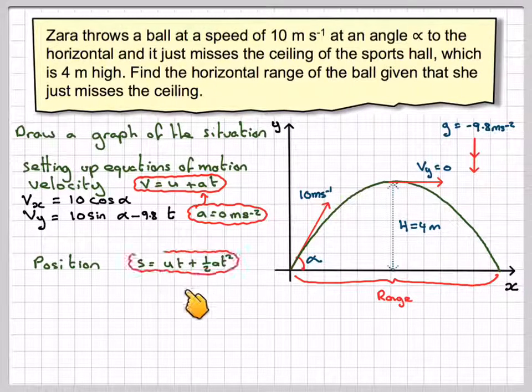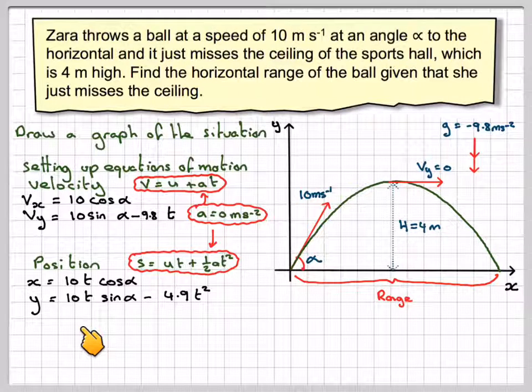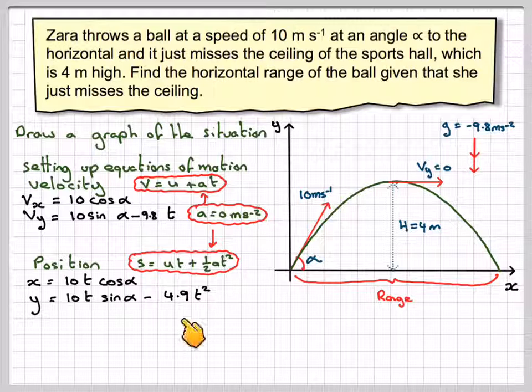For position, we use S equals UT plus a half AT squared. X will be 10T cos alpha, there's no acceleration acting in the horizontal position component. For the vertical component it's going to be 10T sin alpha minus 4.9T squared.